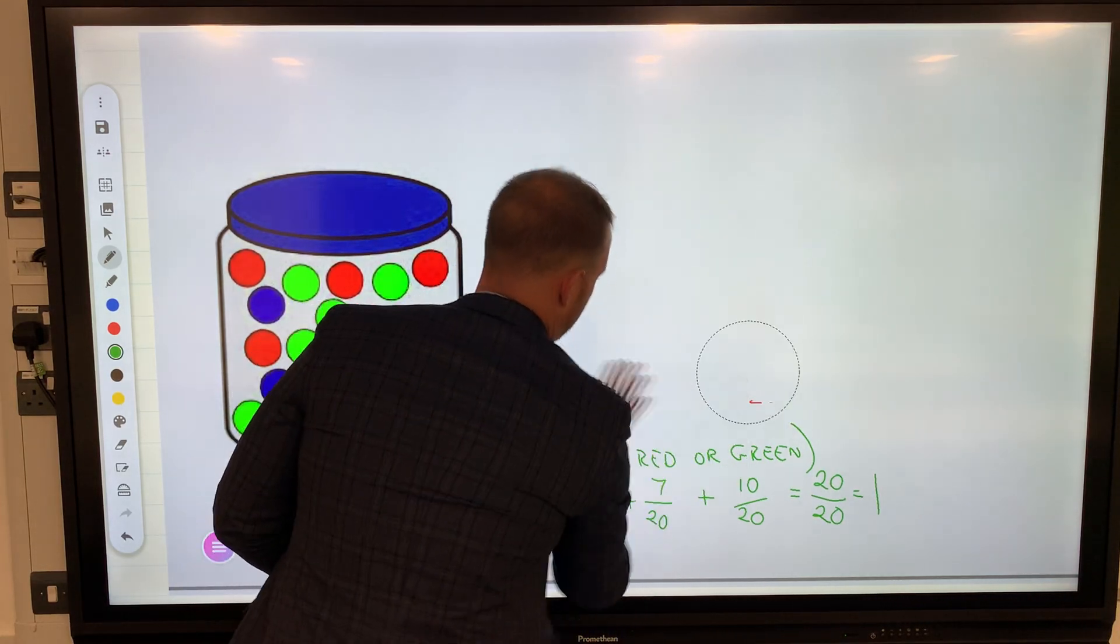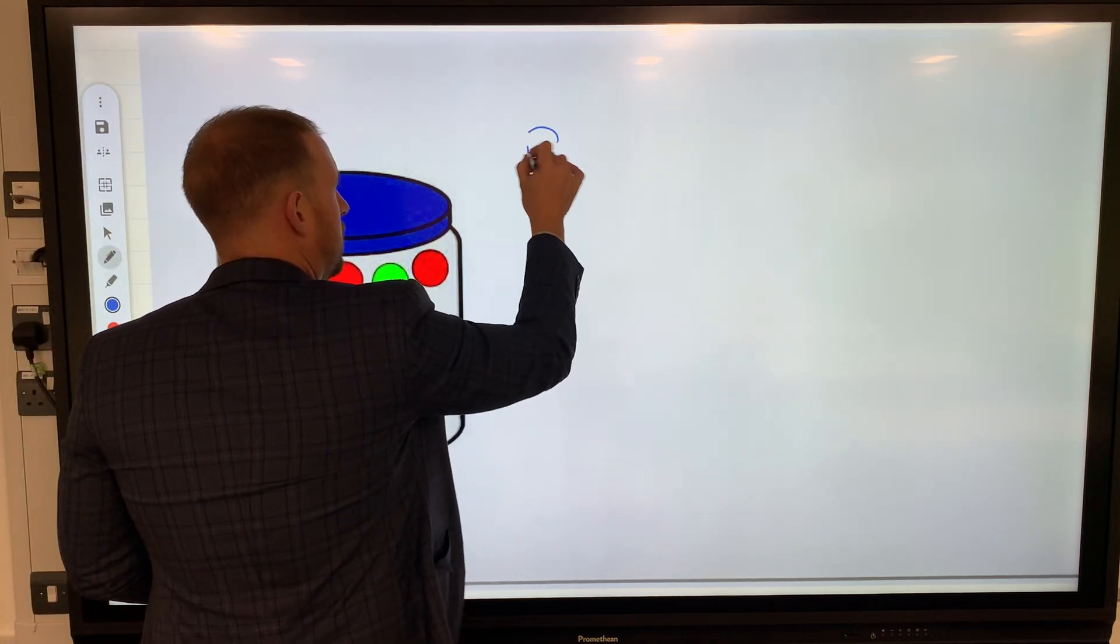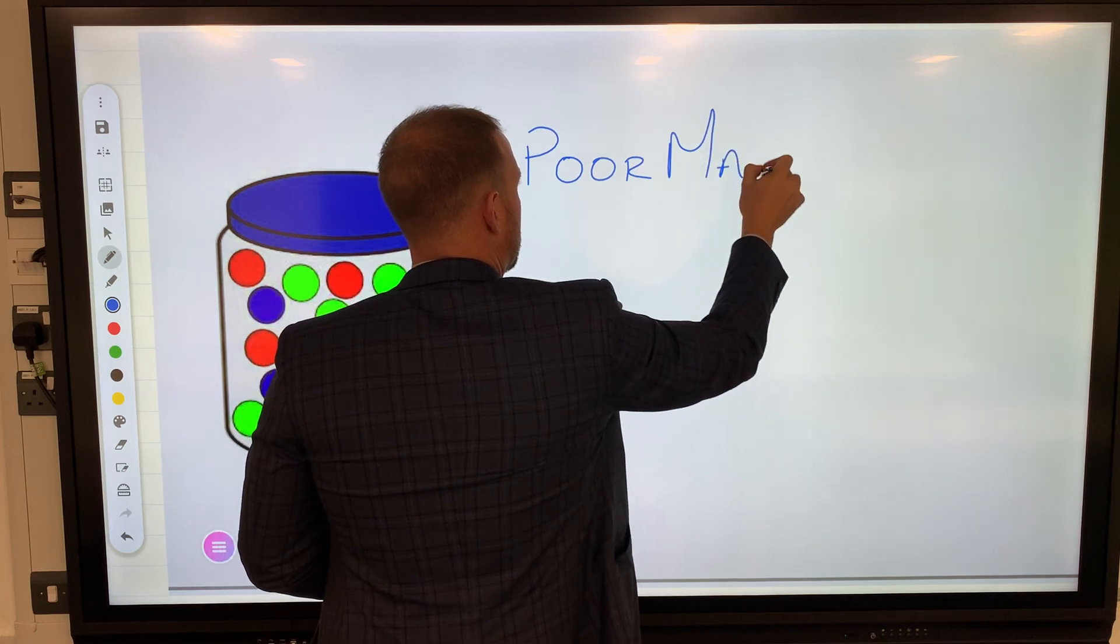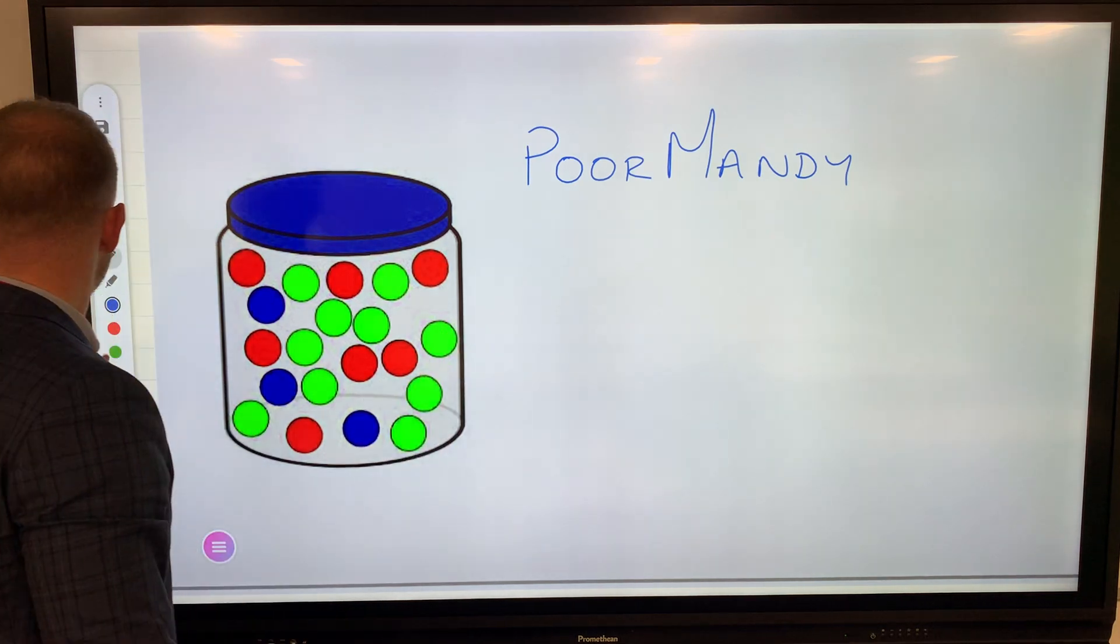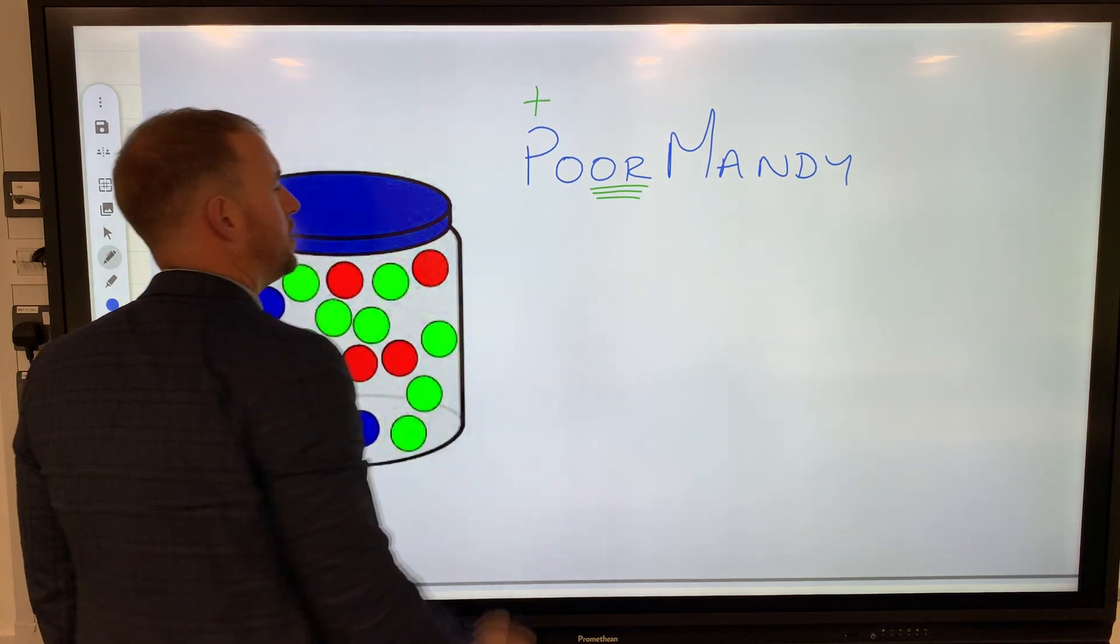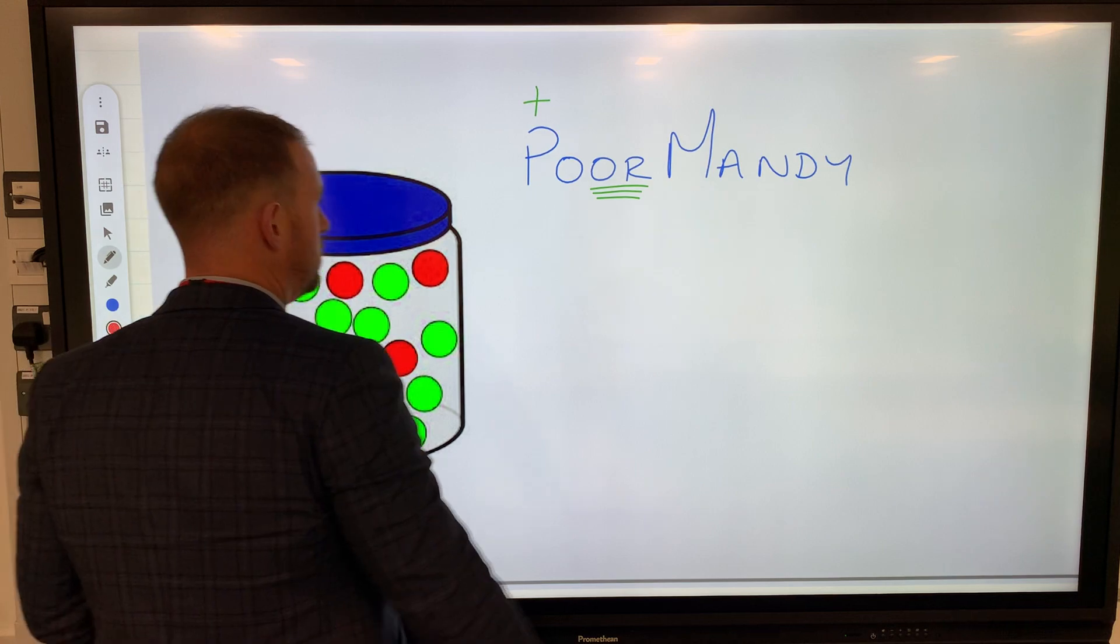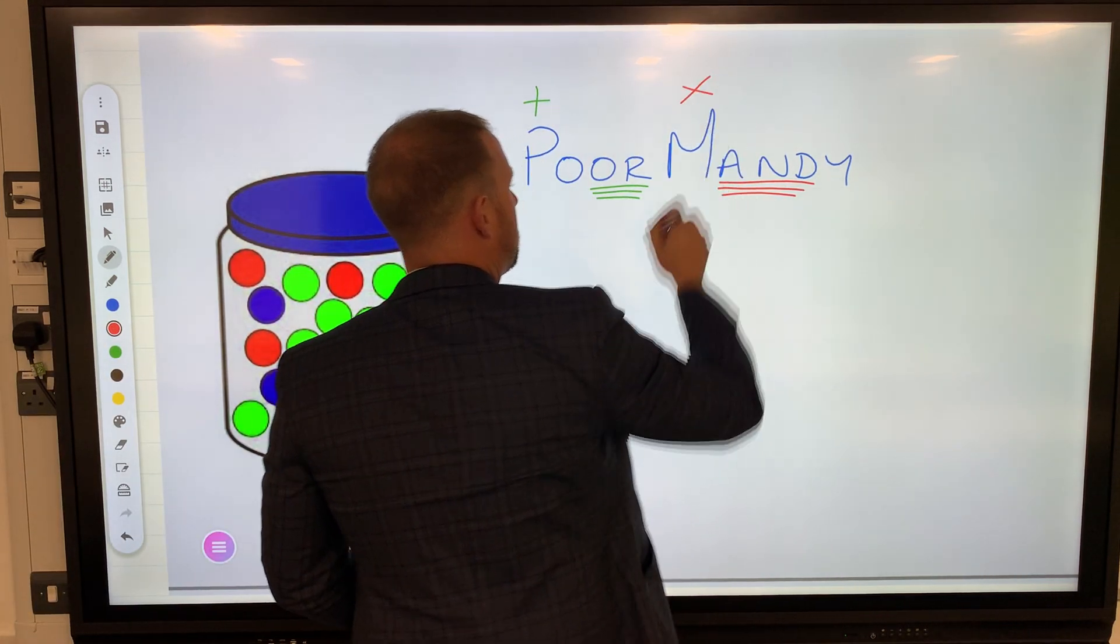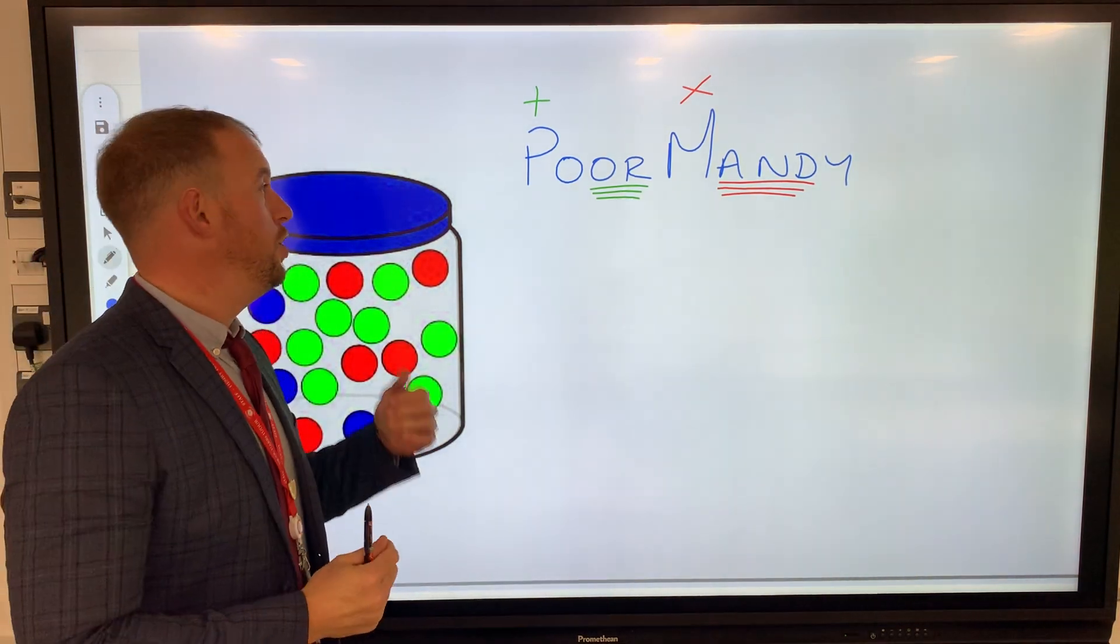I was shown this a couple of years ago and it's stuck with me ever since. I've made these two letters extra big just to stand out. If it says 'or', you have to plus the fractions—P for plus, or.